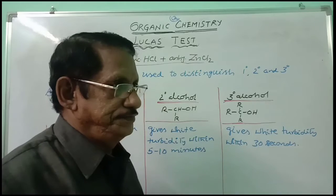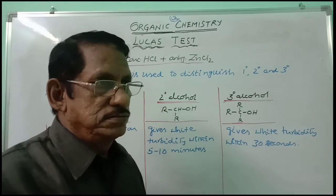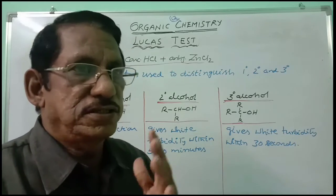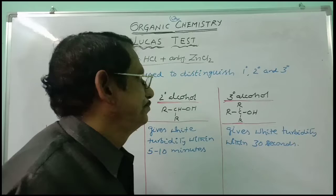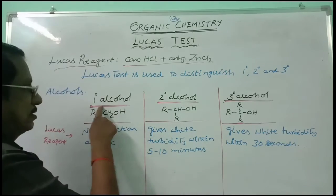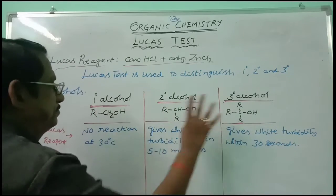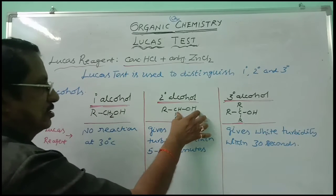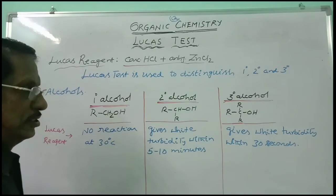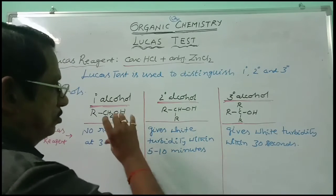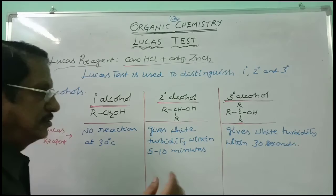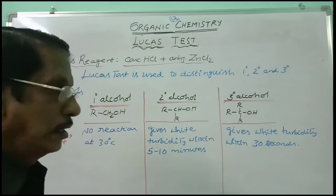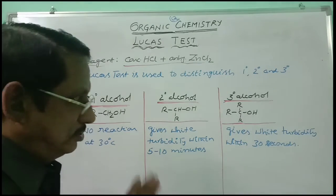Now let us see what is going to happen when this Lucas reagent is added to these three types of alcohols separately. We have primary alcohol (RCH₂OH), secondary alcohol (R₂CHOH), and tertiary alcohol (R₃COH). In three test tubes, we are taking these three and simultaneously adding Lucas reagent to all three at a time. What is going to happen? Let us observe.